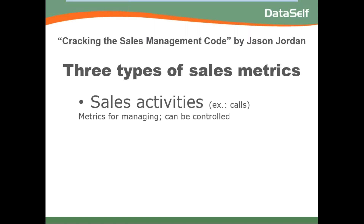The first type revolves around sales activities — things like calls, meetings, and similar actions. These metrics are used for managing your team: how many calls you're making per week, how many meetings, and so forth. They can be controlled, so these metrics are fully controlled by the sales managers.